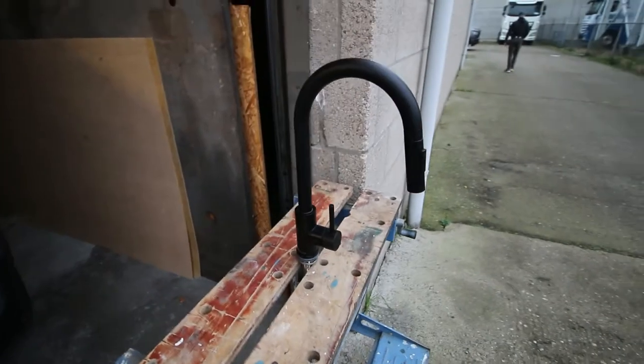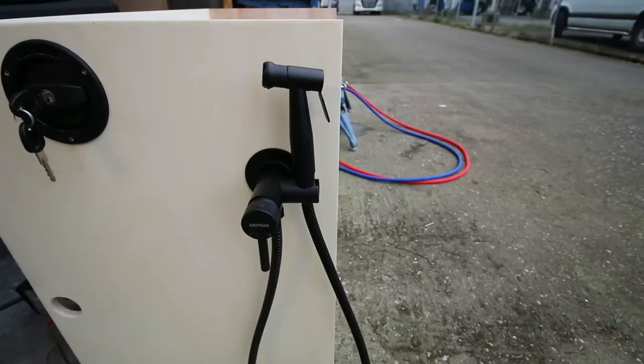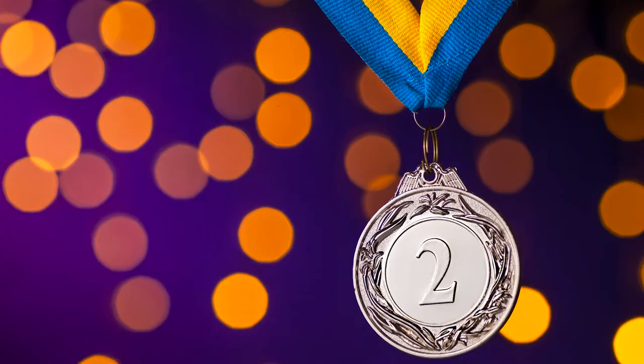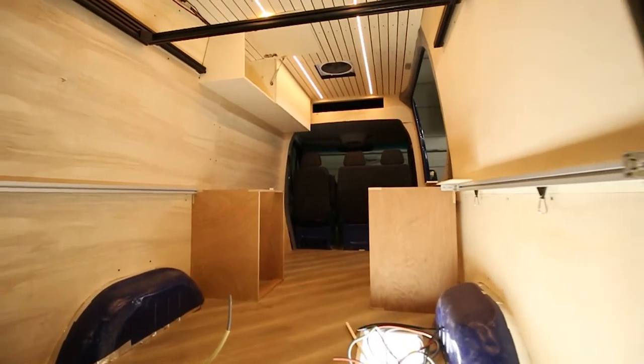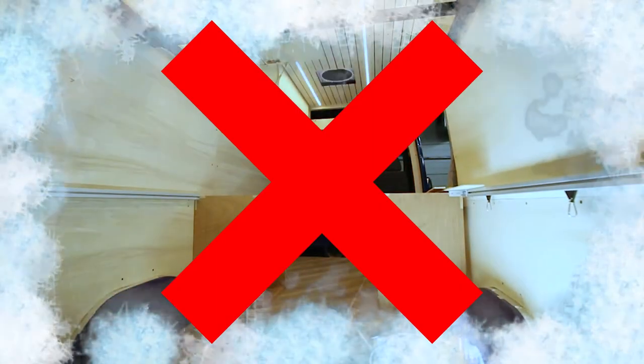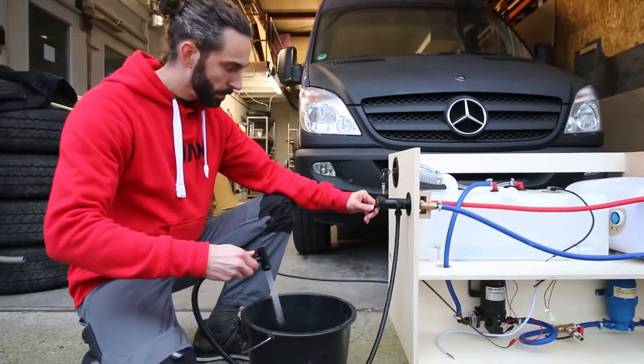We define several principles when designing the system. First, the water filling water tank, pump, water heater and outdoor shower are placed in one cabinet. Second, this cabinet is mounted inside the camper so that the chance of freezing is reduced if you go camping in the early or late season. Third, everything is easy to reach for maintenance.